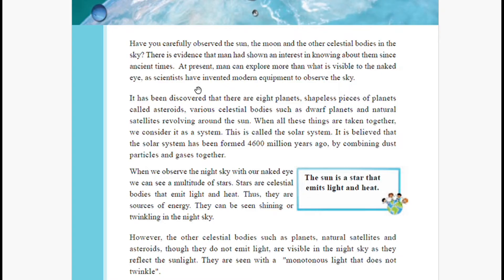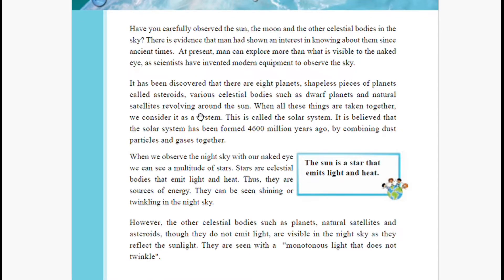Nowadays we have improved and invented a lot of modern equipment to observe the sun and the moon. It has been discovered that there are eight planets, shapeless pieces called asteroids, and various celestial bodies such as dwarf planets and natural satellites revolving around the sun.